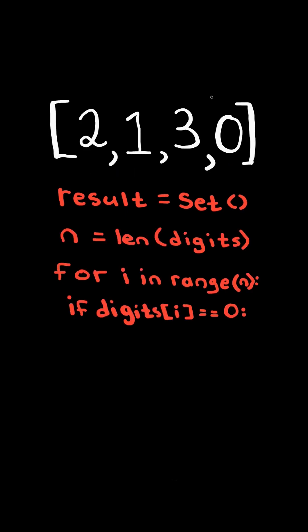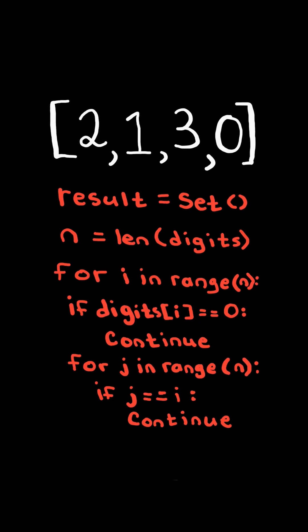If the digit is a leading zero, we skip it. We then create a nested loop j. If j equals i, we don't want to reuse it.